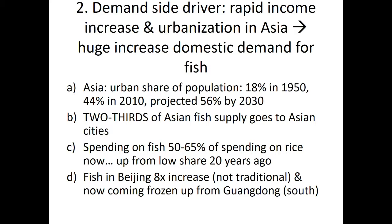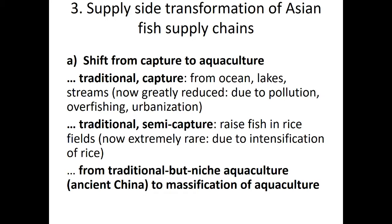Fish consumption in Beijing has gone up eight times over about a decade. It was not a traditional fish city — even professors I worked with there assumed fish came from local catch. In fact it's coming from long supply chains of frozen fish from Guangdong and Shandong up to Beijing. The same processes that occurred in Europe and the US are occurring very quickly in Asia, but compressed into a period four to five times shorter than it took in the US.